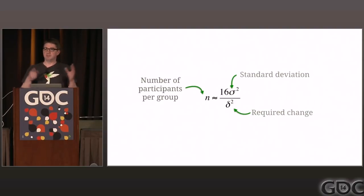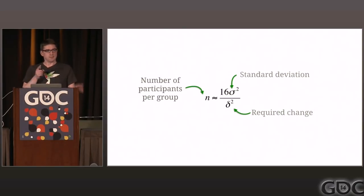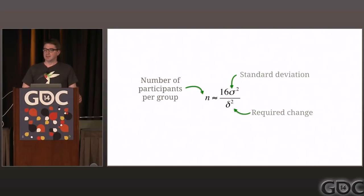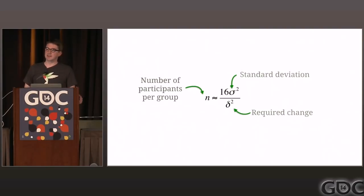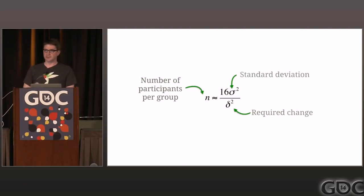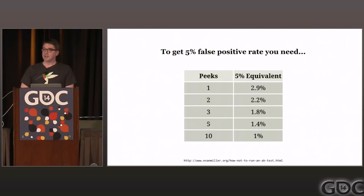This means people typically ignore this, compute they need 100,000 users, start their test, and immediately start looking at graphs and p-values. As soon as something hits 0.05, they say 'stop, I'm good to go.' What that means is they're taking the very first time that noise has pushed the p-score below 0.05, which is a really bad thing to do. It increases the chances of getting a false positive.